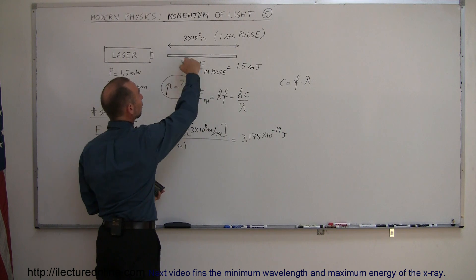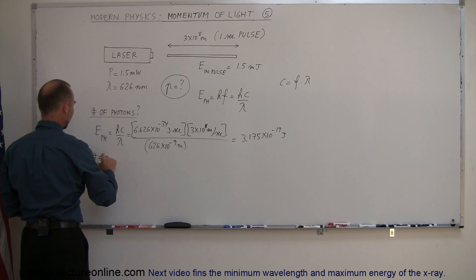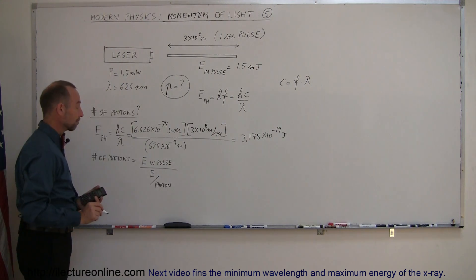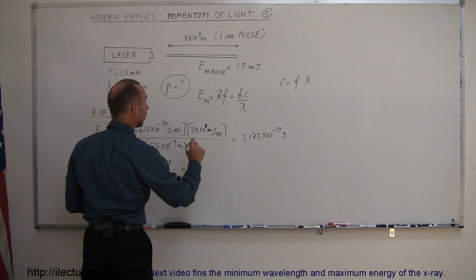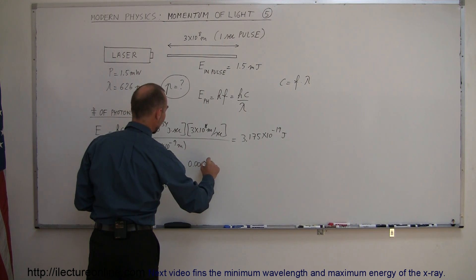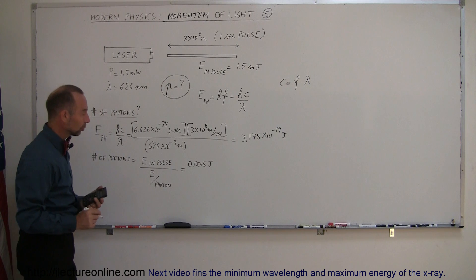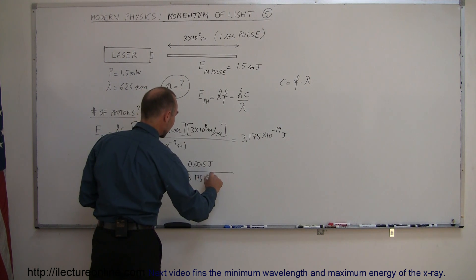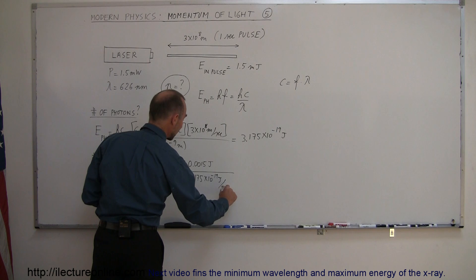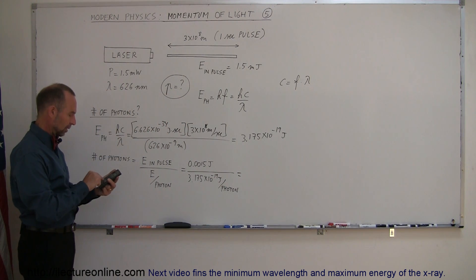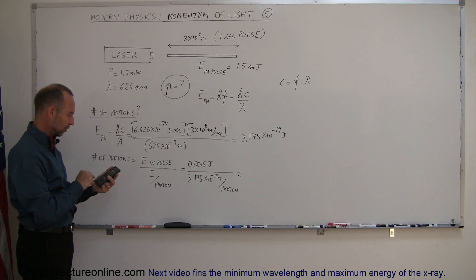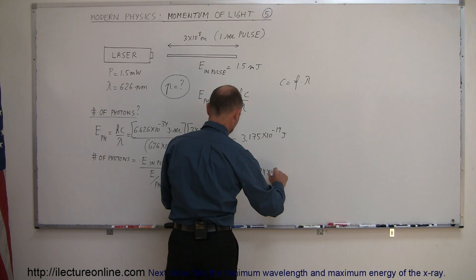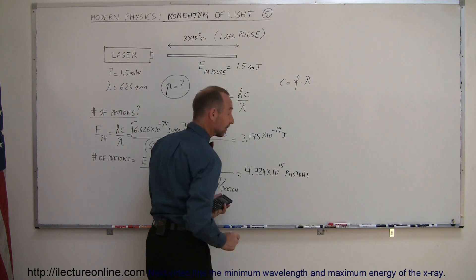The energy in the pulse is 1.5 millijoules, so the number of photons equals the energy in the pulse divided by the energy per photon. Plugging in: 0.0015 joules divided by 3.175×10⁻¹⁹ joules per photon. Taking the inverse and multiplying gives us 4.724×10¹⁵ photons. That's a lot of photons.